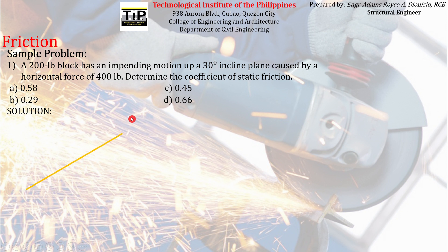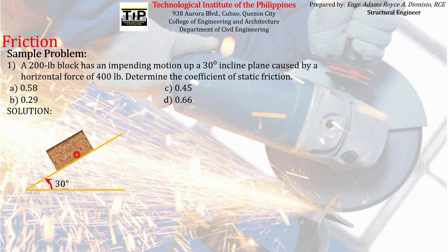We draw the inclined plane inclined at 30 degrees, and then we have this block with a weight equal to 200 pounds. The weight is always acting at the center, or more precisely at the centroid — the center of gravity — of the block.